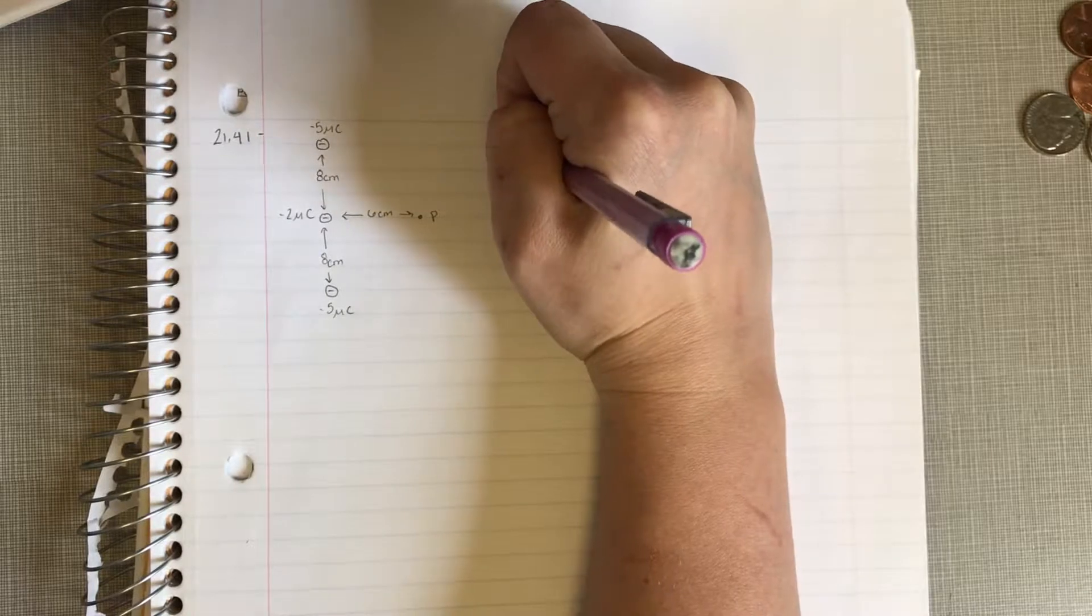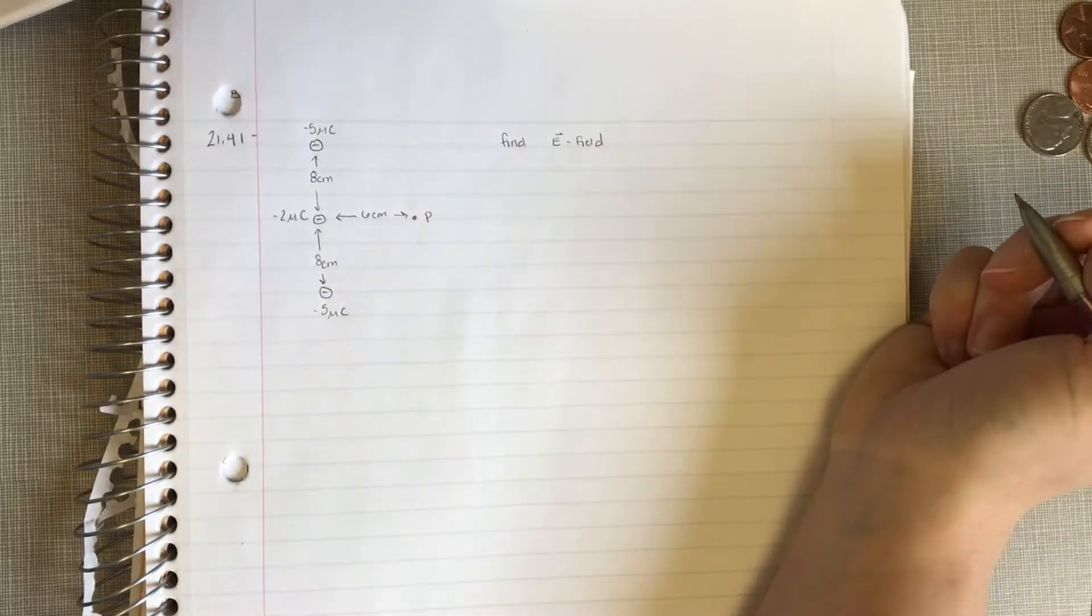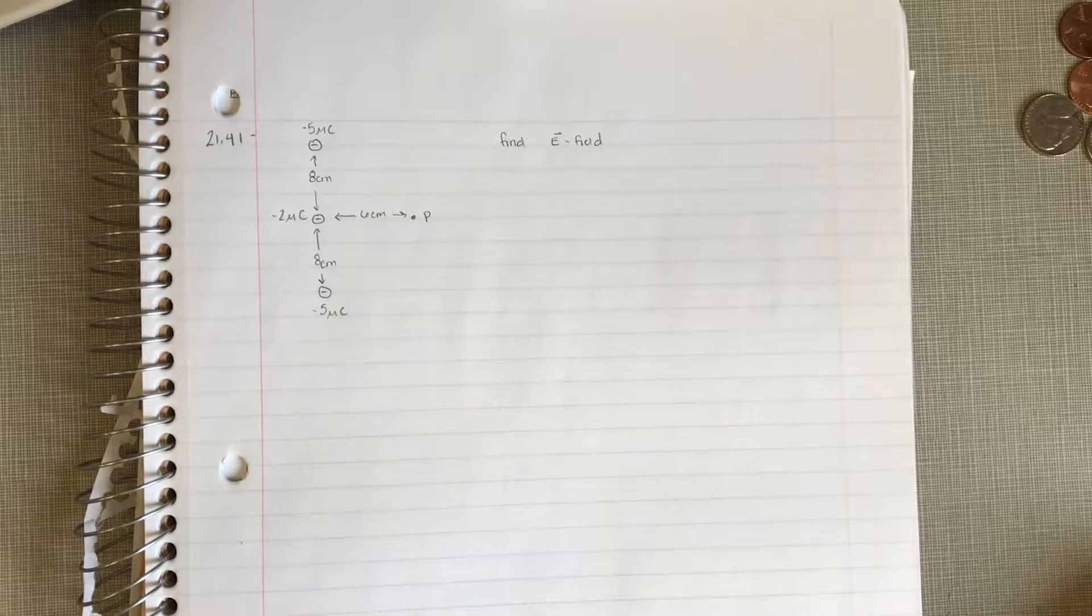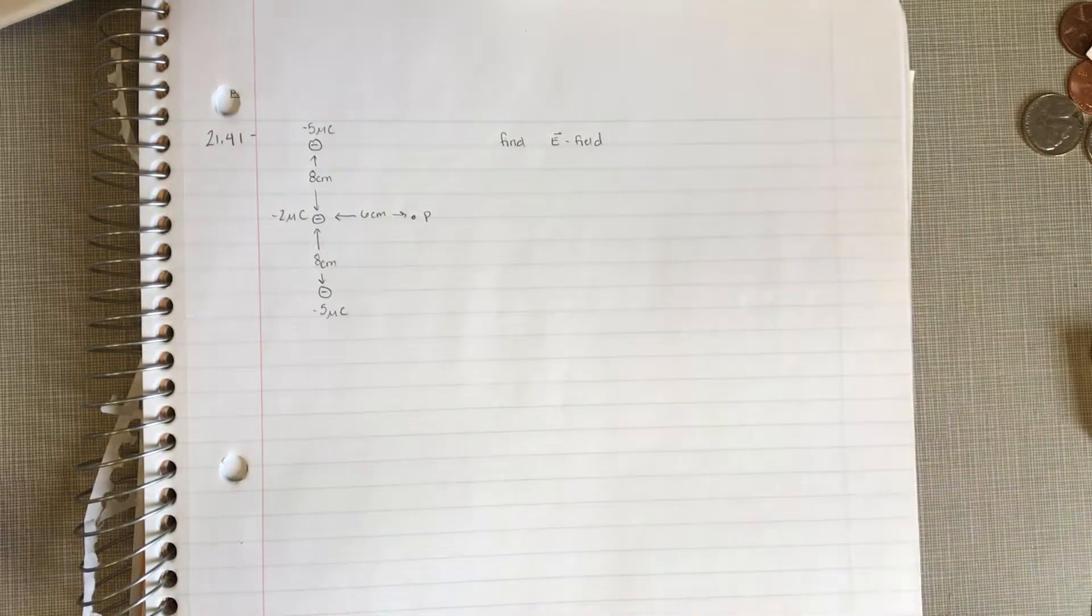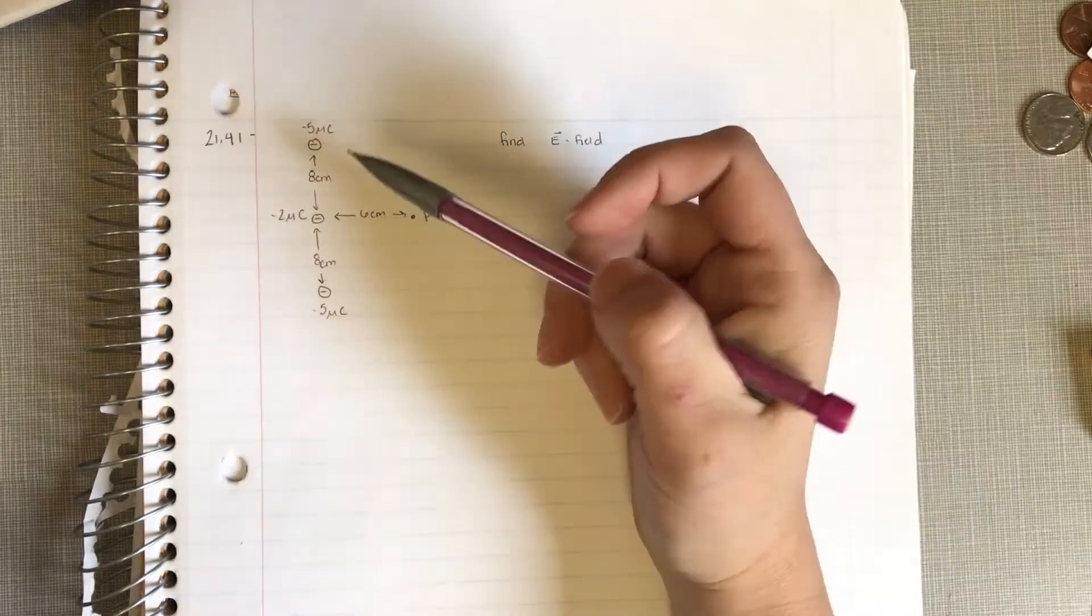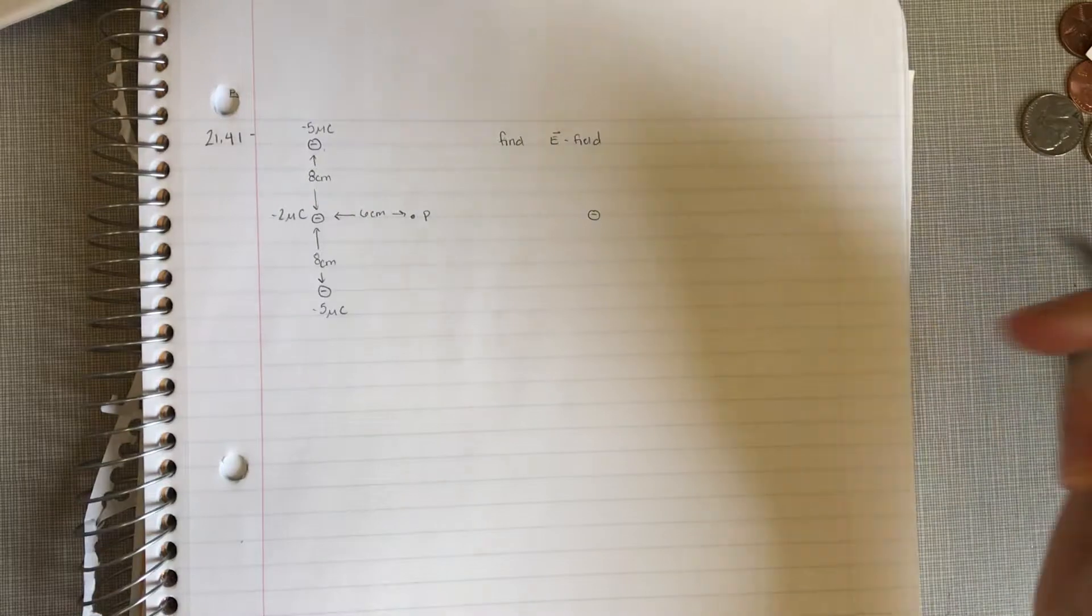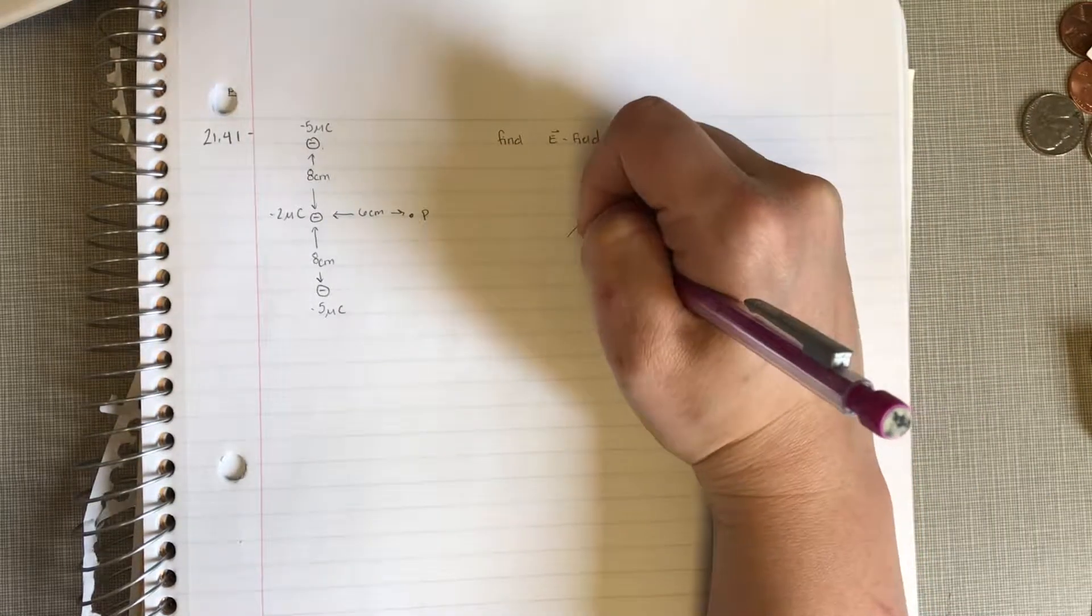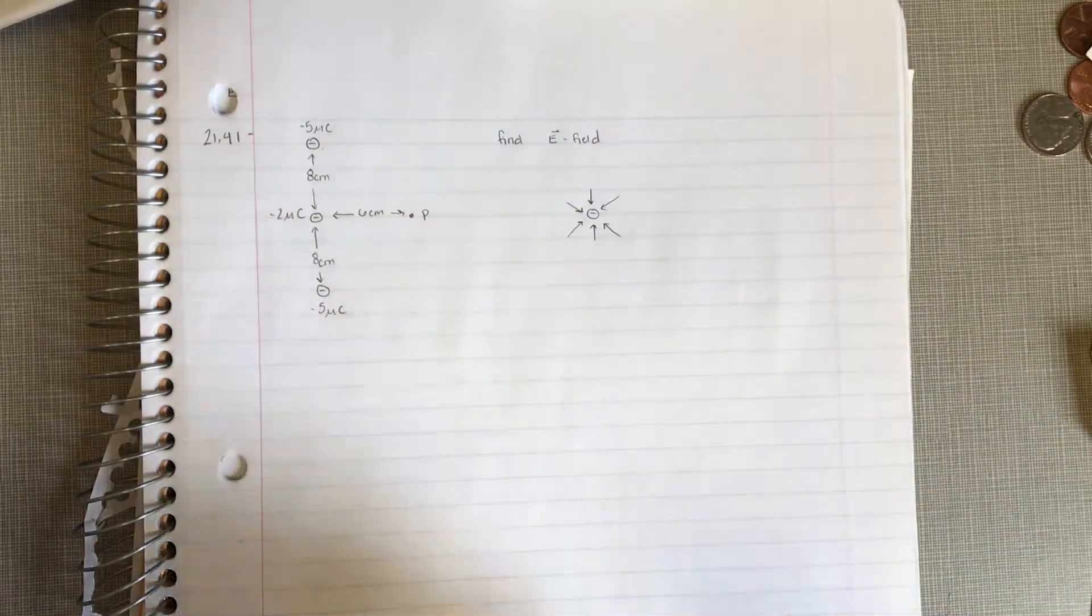So we want to find the E field. Okay, so first things first, it's always helpful to draw which way that electric field is going to go, so you can get an idea of what you should be looking for as you're adding your different components. So negative charges, negative point charges, have electric fields that come inward, radially towards them. And similarly, positive point charges have electric fields that go radially outward.